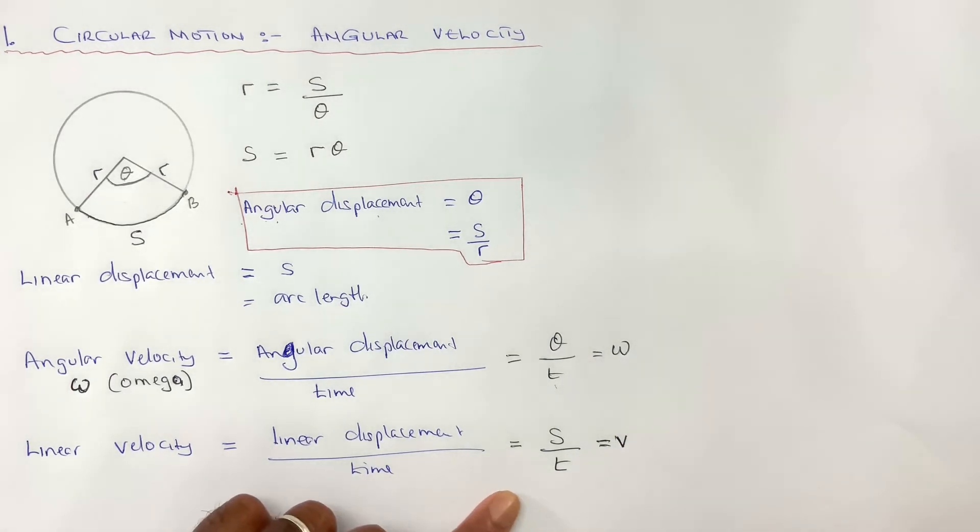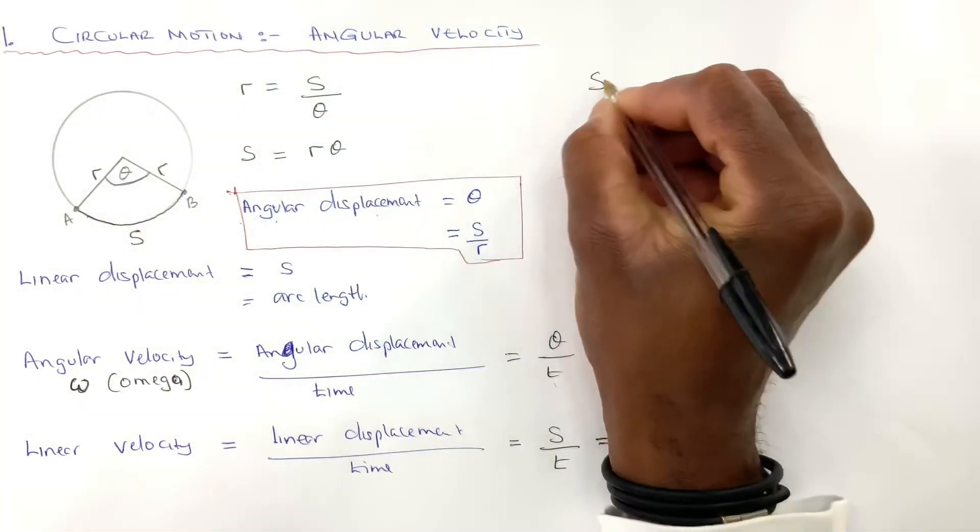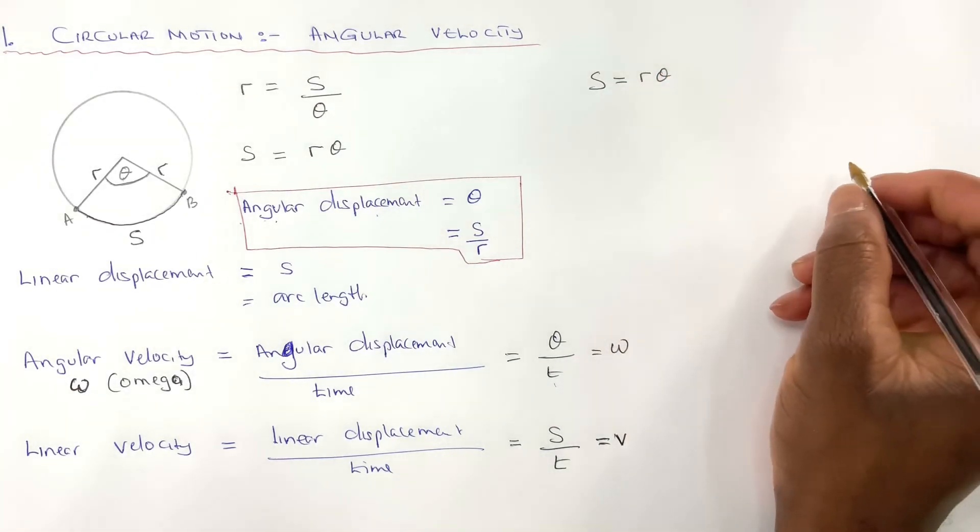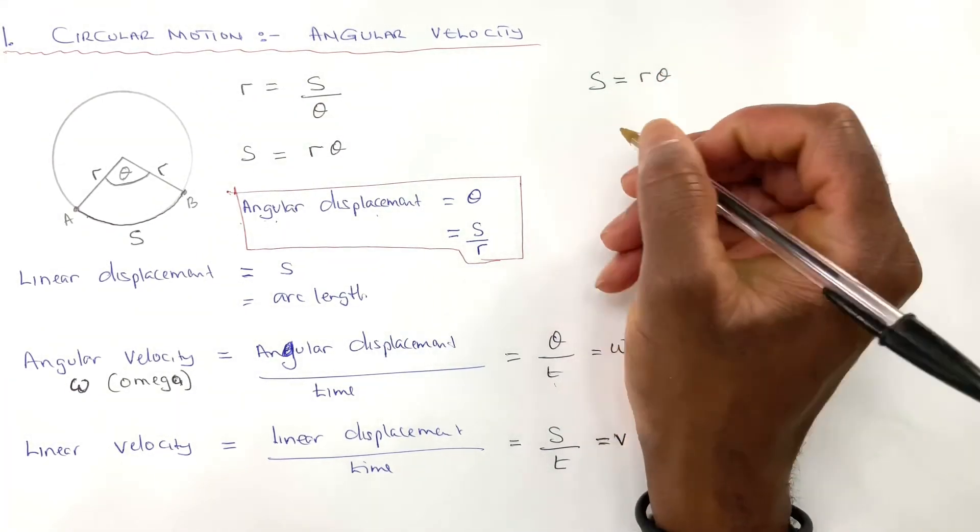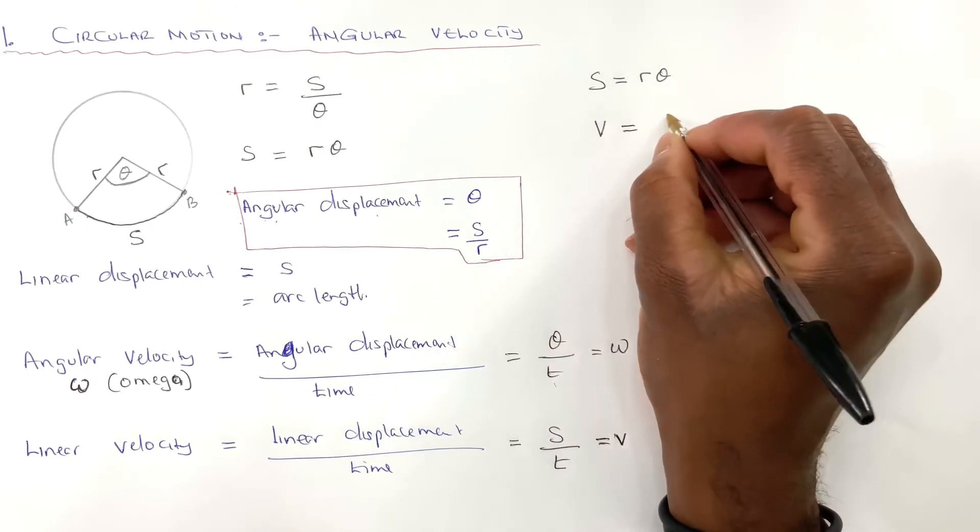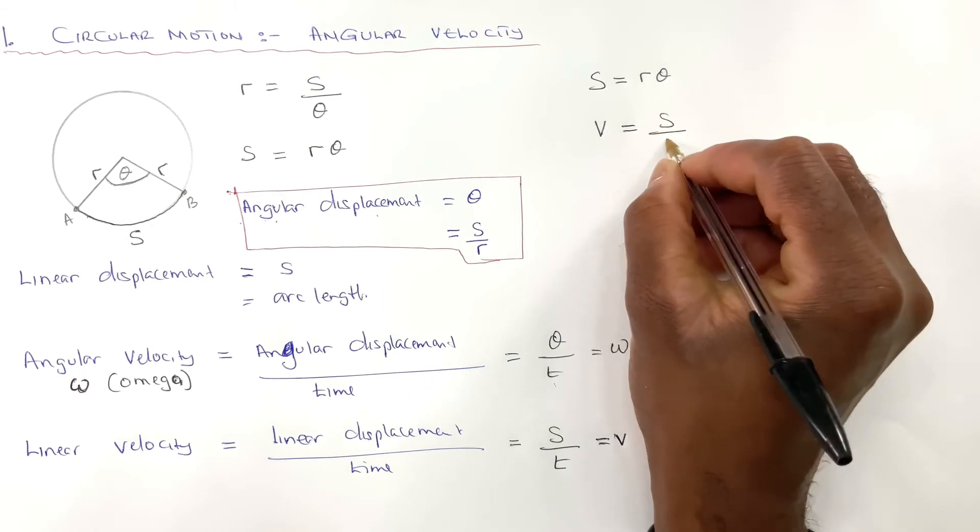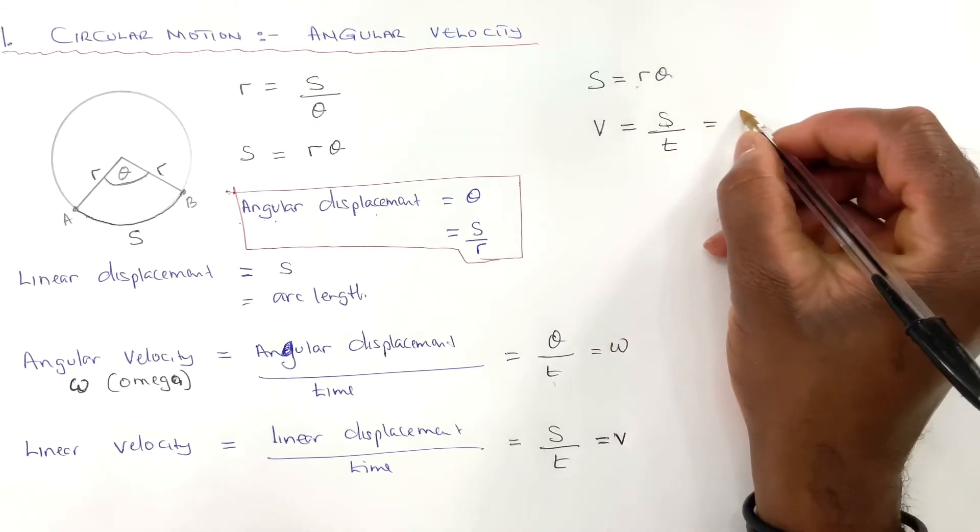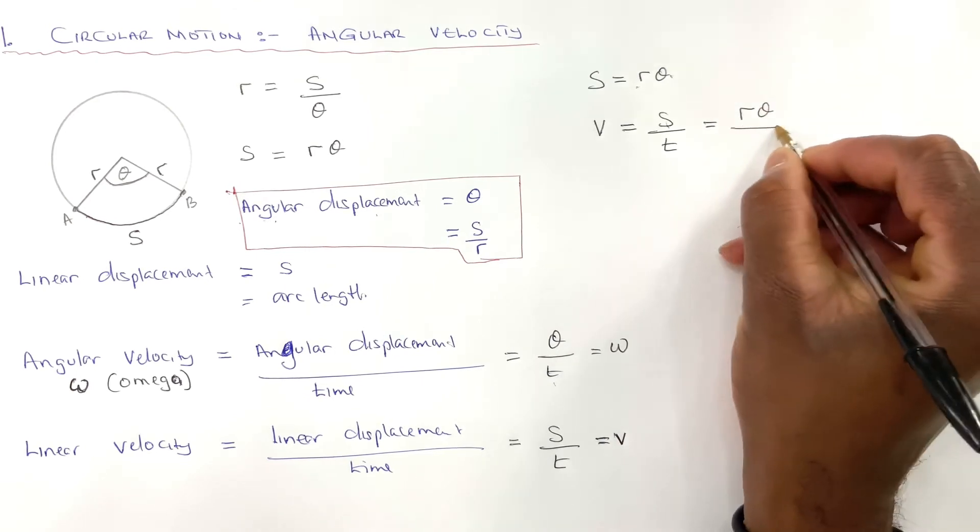So now, what we now need to do is to write down the relationship between the two of them. S equals R theta. And the linear velocity, V, is equal to S over T. And if we replace S with R theta, it's going to be R theta over T.